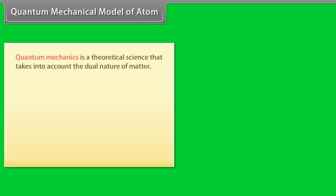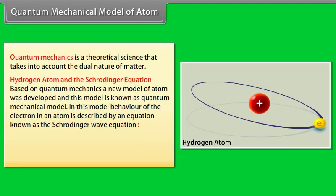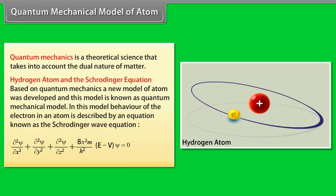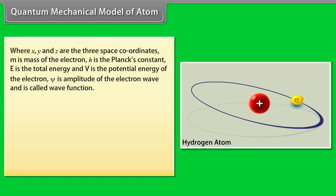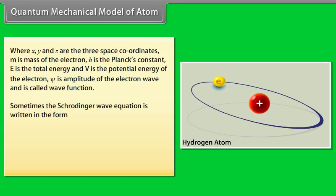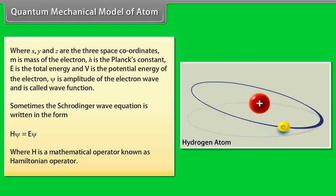Quantum Mechanics is a theoretical science that takes into account the dual nature of matter. Based on quantum mechanics, a new model of atom was developed known as the Quantum Mechanical Model. In this model, the behavior of the electron in an atom is described by the Schrödinger Wave Equation, where X, Y and Z are the three space coordinates, M is mass of the electron, h is Planck's constant, E is the total energy, V is the potential energy of the electron. The Schrödinger Wave Equation is sometimes written as HΨ = EΨ, where H is a mathematical operator known as the Hamiltonian operator.